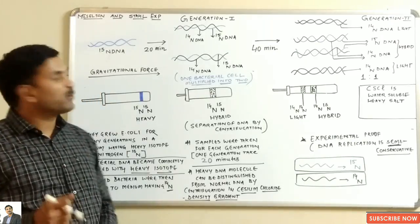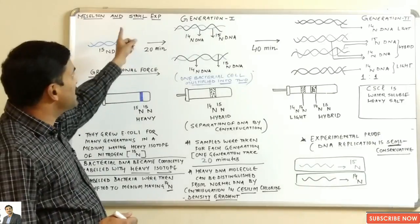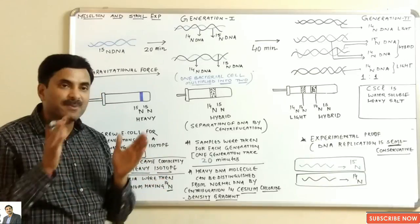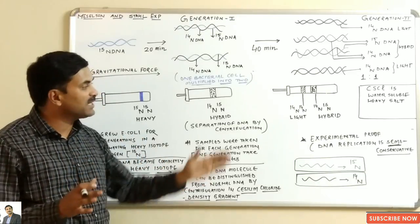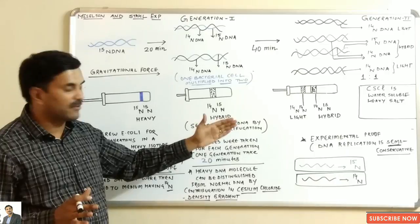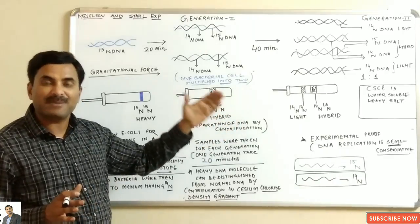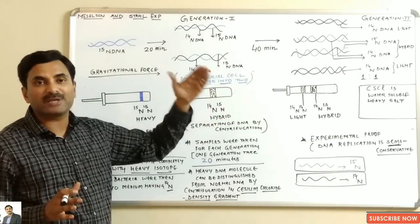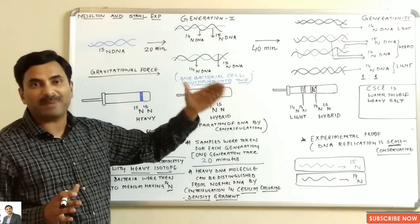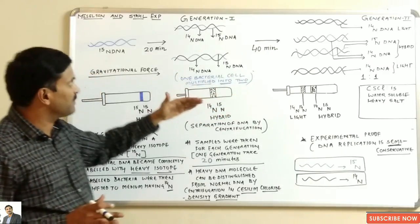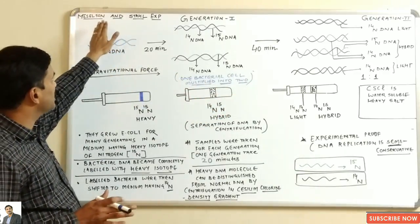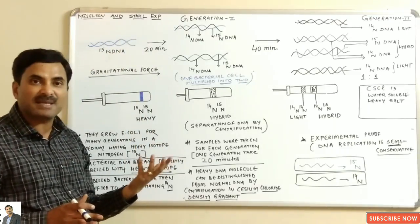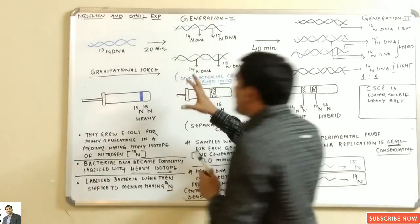We are going to study the Meselson and Stahl experiment. This experiment was basically done to prove that DNA replication is semi-conservative. The question arises: what is semi-conservative? Semi-conservative means half of the parental DNA is conserved in each generation.